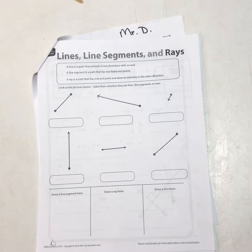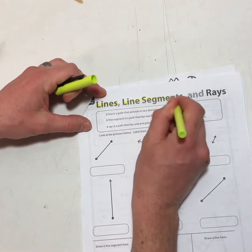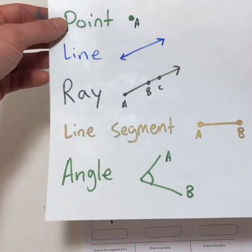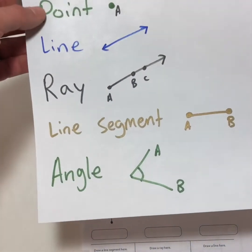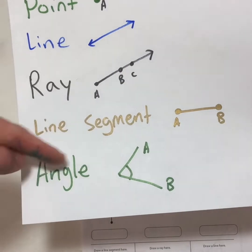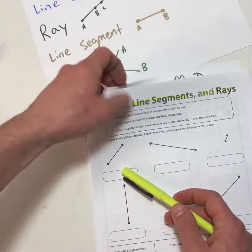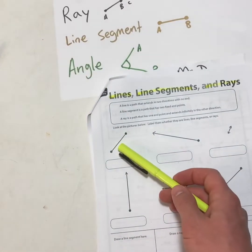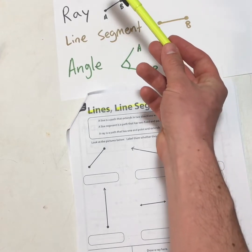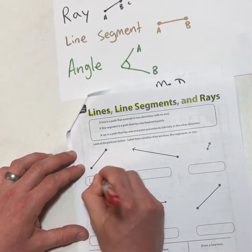We're still going to talk about lines, line segments, and rays. We have to decide which one of these is a line, a line segment, or a ray. I made a cheat sheet — here it is. Everything from page one of our math packet I rewrote here so I can just look: point, line, ray, line segment, angle. So let's go to the first one — what does that look like? It's a point but it has more to it. It's definitely a line segment. I'm going to write 'line segment.'